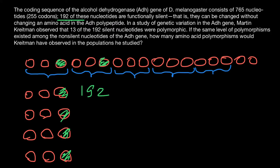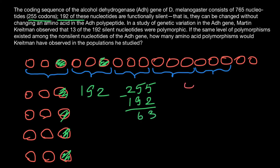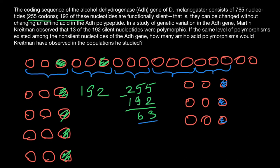192 codons out of 255, if we change the last position in them, would still code for the same amino acid. That means 255 minus 192 gives us 63 trinucleotides where, if we change even the last position, we do change the amino acid. So 63 codons have a non-silent third position, and 192 codons have a silent third position.